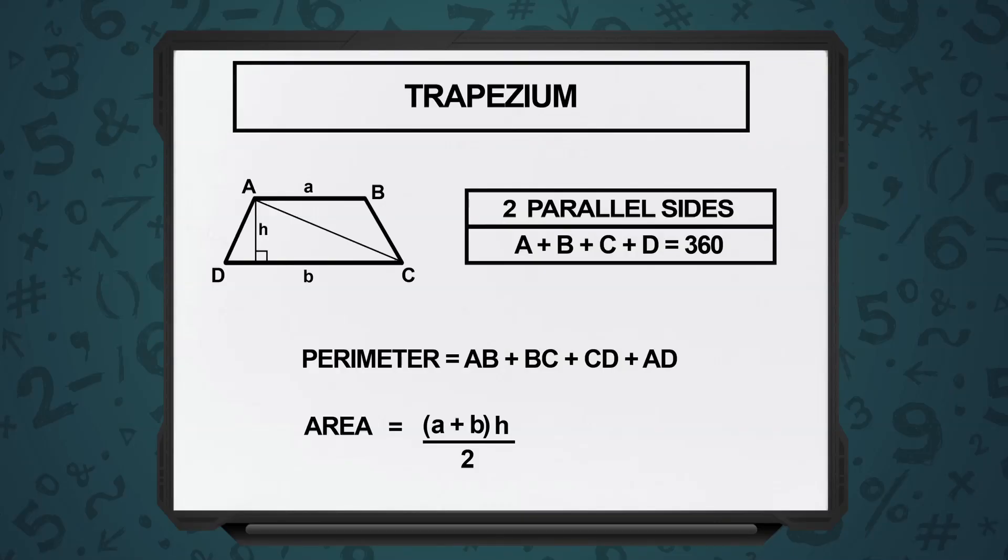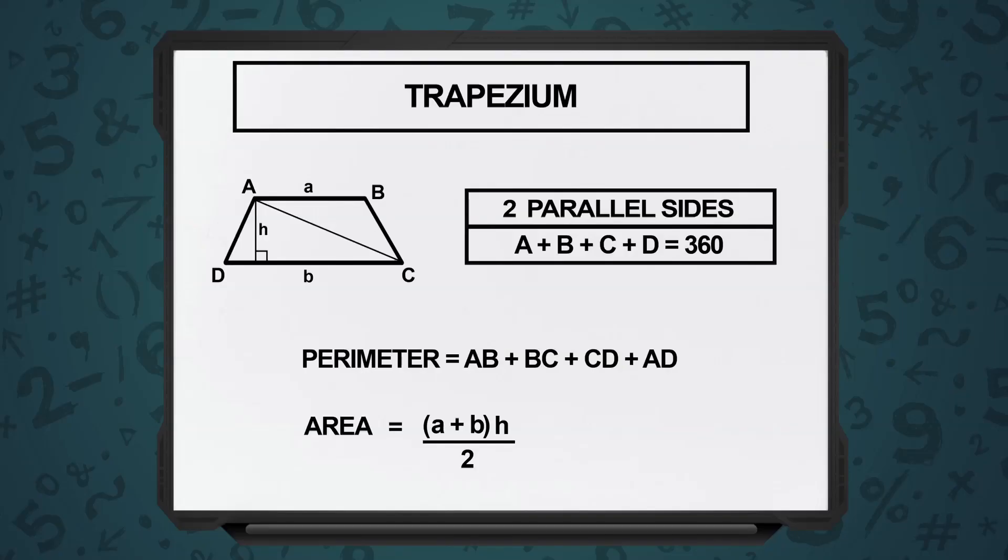A trapezium means one pair of opposite sides are parallel to each other. Let's say the length of one side is A and the side parallel to that is B, and the other two sides are C and D. So the perimeter of a trapezium is nothing but sum of all four sides: A plus B plus C plus D.